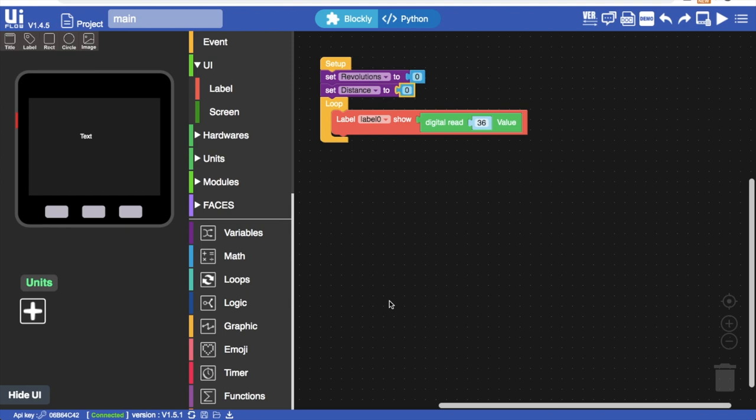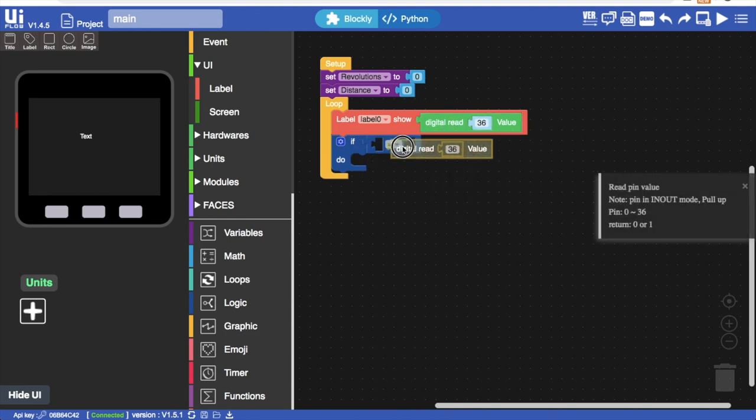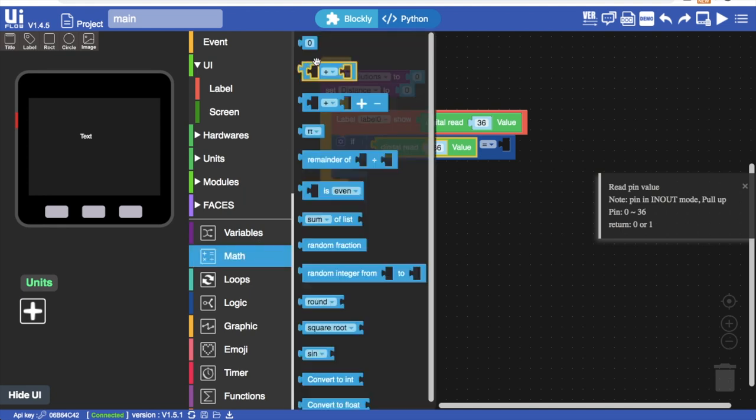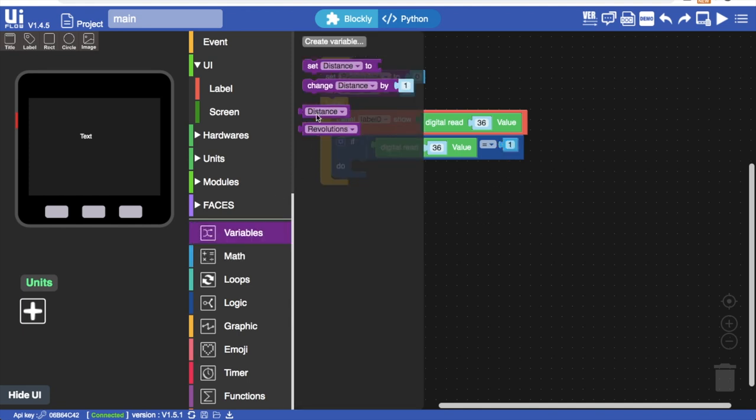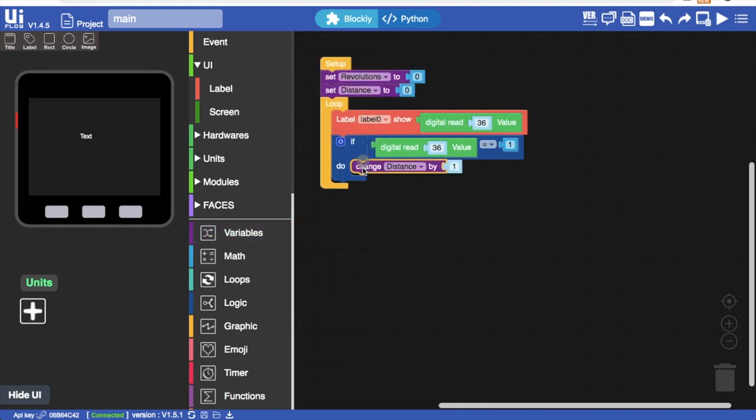Now we're going to need some logic from the logic blocks. Grab an if do block and place it below the label block. Then go back into the logic blocks and find the comparator block. In the first slot we'll copy our digital read pin 36 and in the second we'll place a math block and set it to 1. Now we can go back into the variables section, choose the change by block and set it to change revolutions by 1 for every single time the sensor is triggered.